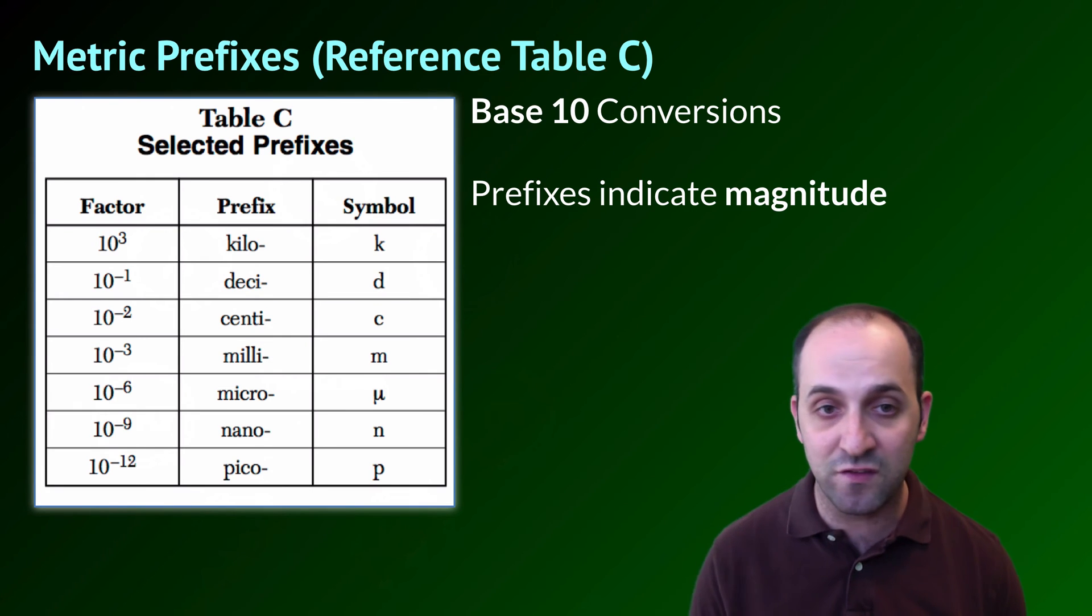So, it's good to have a handle on these prefixes because you should expect to see things like micro and nano and pico in your chemistry investigations, and you should have a good handle on how to deal with them, but you can always look at the reference table if you need it.